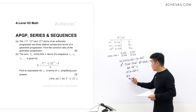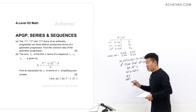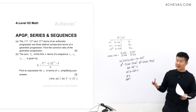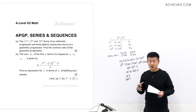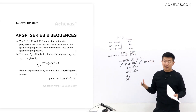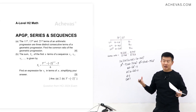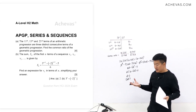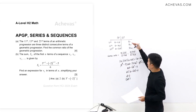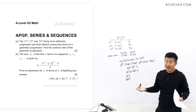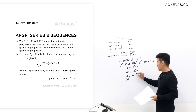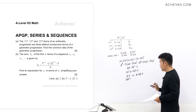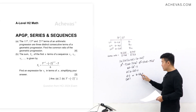This means either d = 0 or a + 6d = 0. d = 0 must be rejected — if d were zero, every term of the AP would be identical, which contradicts the requirement that these are distinct numbers. So we proceed with a + 6d = 0.